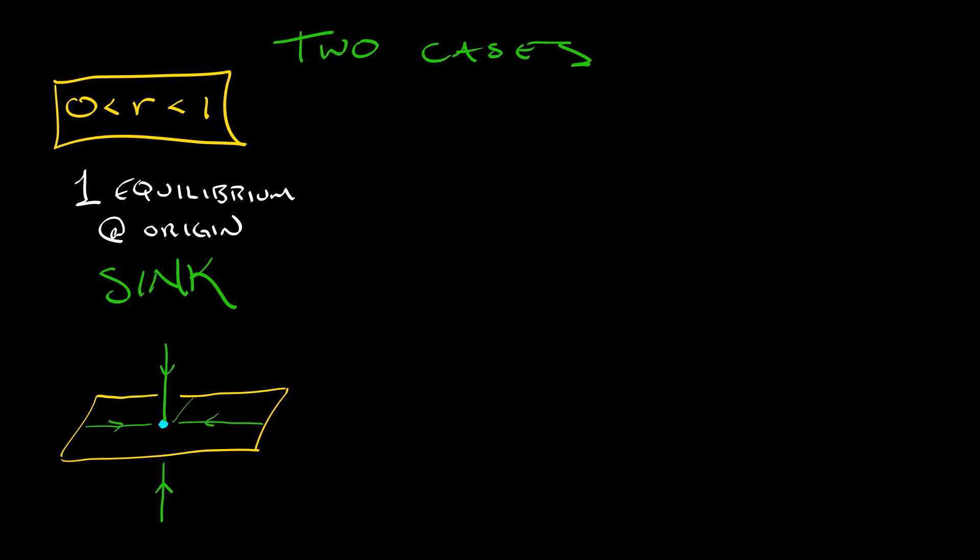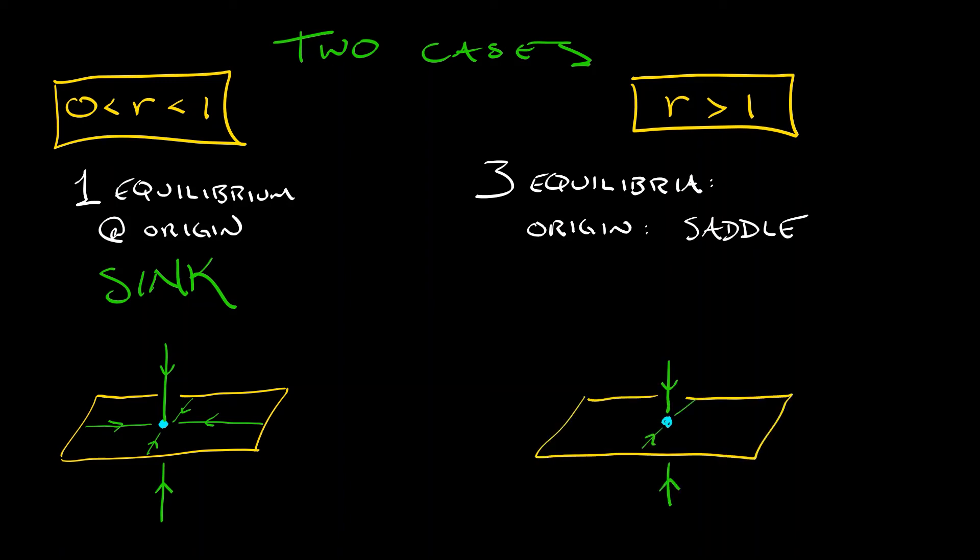But the second case, a little bit more interesting. When r is bigger than one, we have three equilibria. And the origin winds up being a saddle with two dimensions of stability and one dimension of instability.